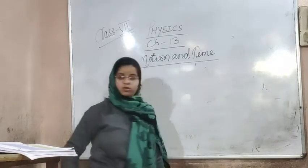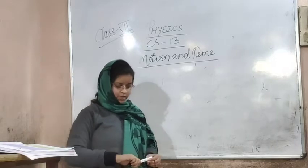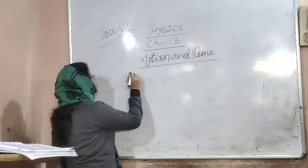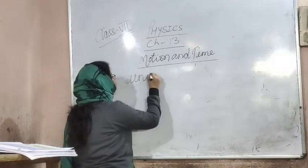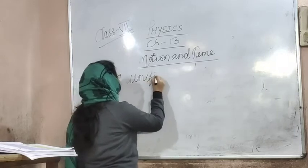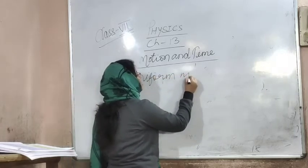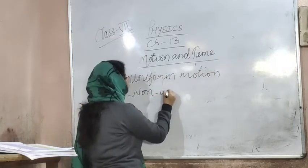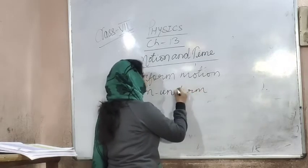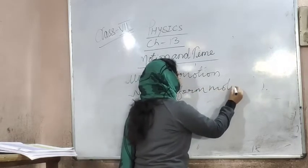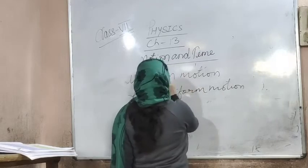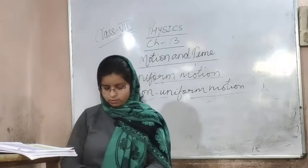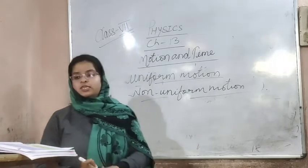This is a small topic and it is finished. Now we will see the last topic of our chapter on motion and time. The last topic is uniform motion and non-uniform motion. First I will define it, then I will explain it.